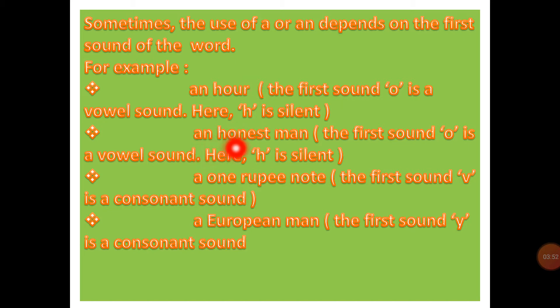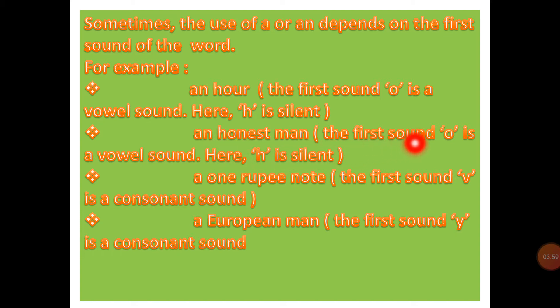An honest man. Here again, the first letter H is silent, and the first sound O is a vowel sound. That's why here an will come. Okay, students?